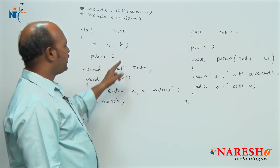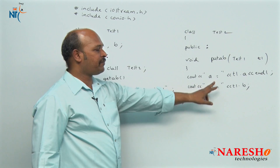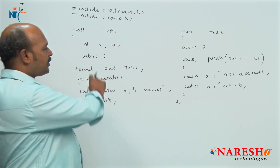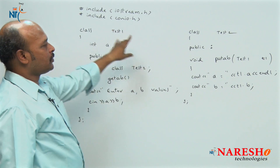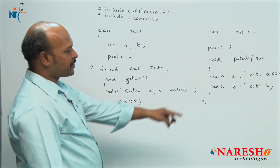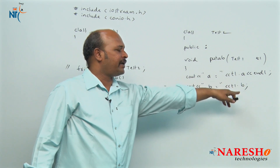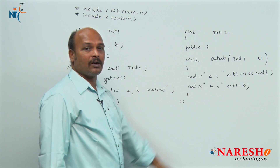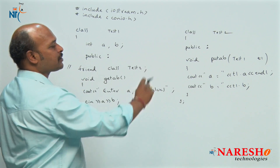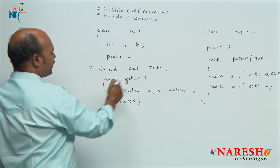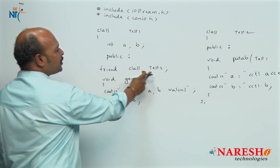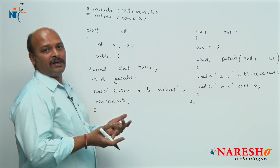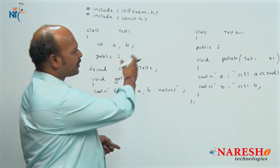Notice that A and B are declared in test1 but we are accessing them from test2 because test2 is declared as a friend to test1. If I comment out the friend declaration, we get errors like 'undefined symbol a', 'undefined symbol b', or 'test1::a is not accessible'. That is why we must introduce test2 as a friend — friends can access our private data, just like in real life.